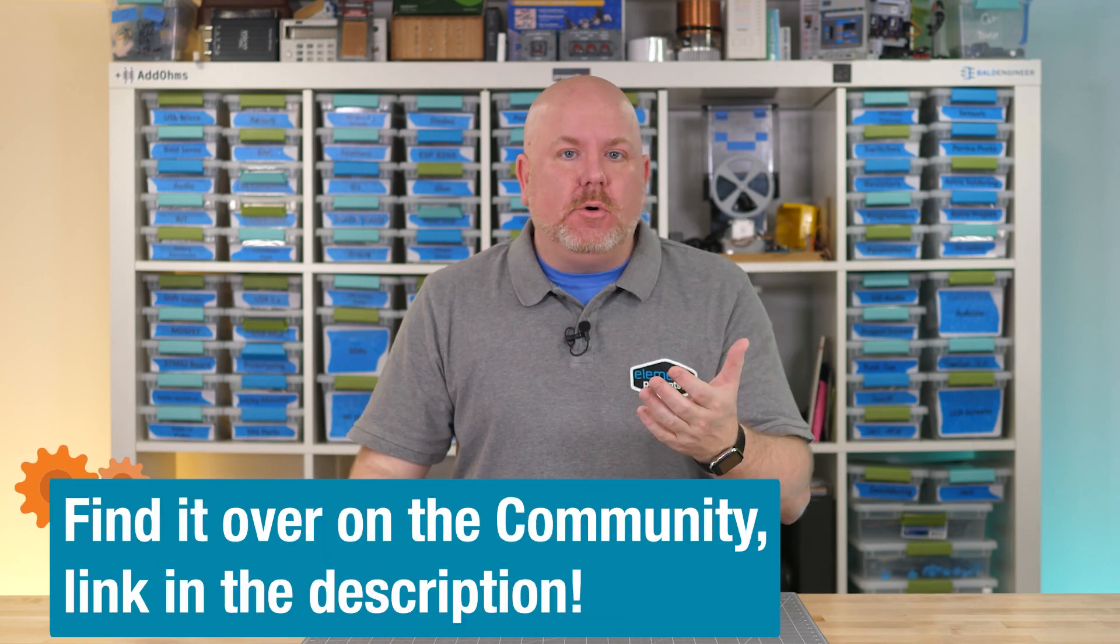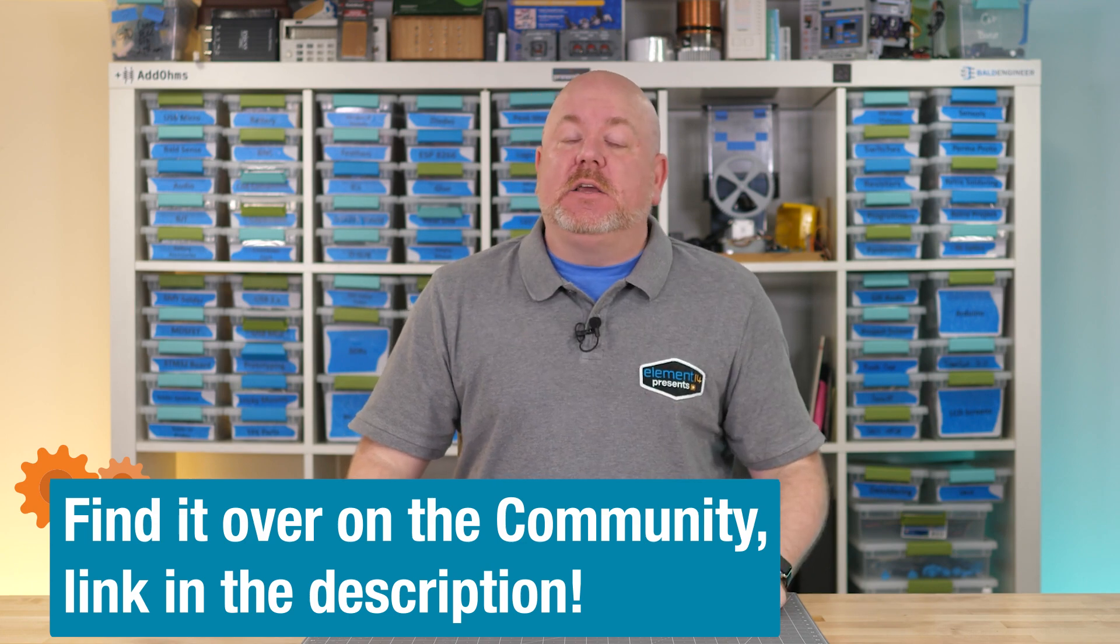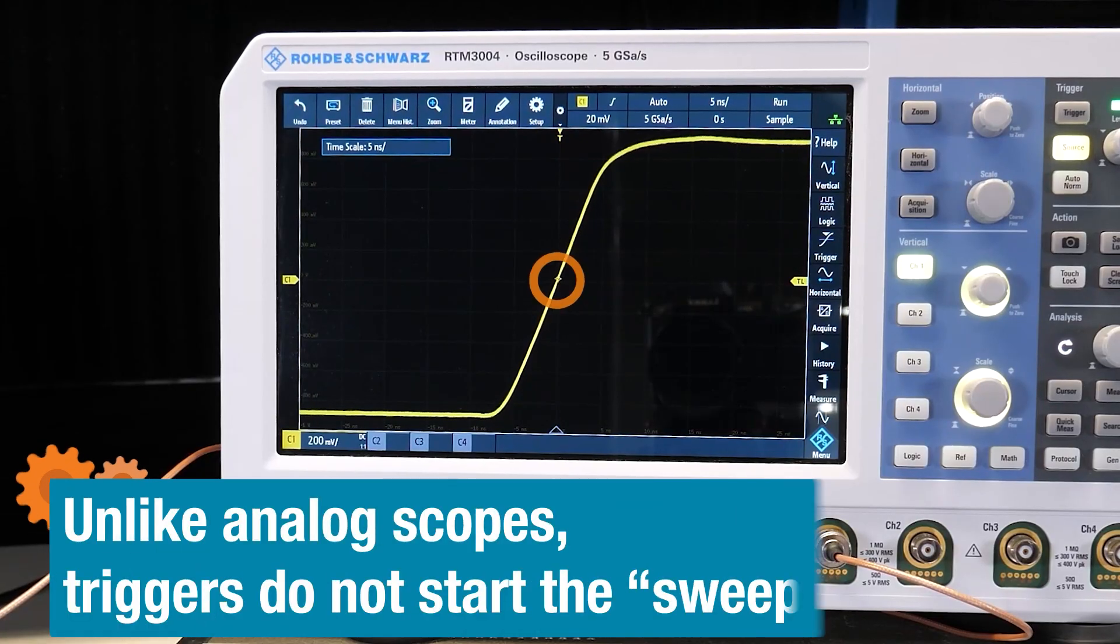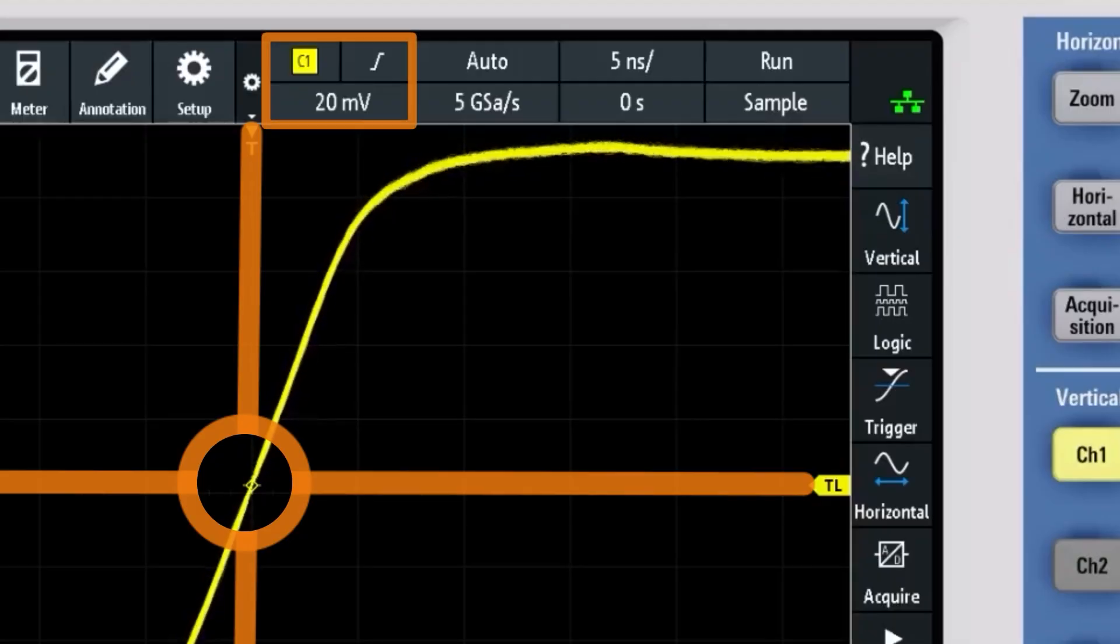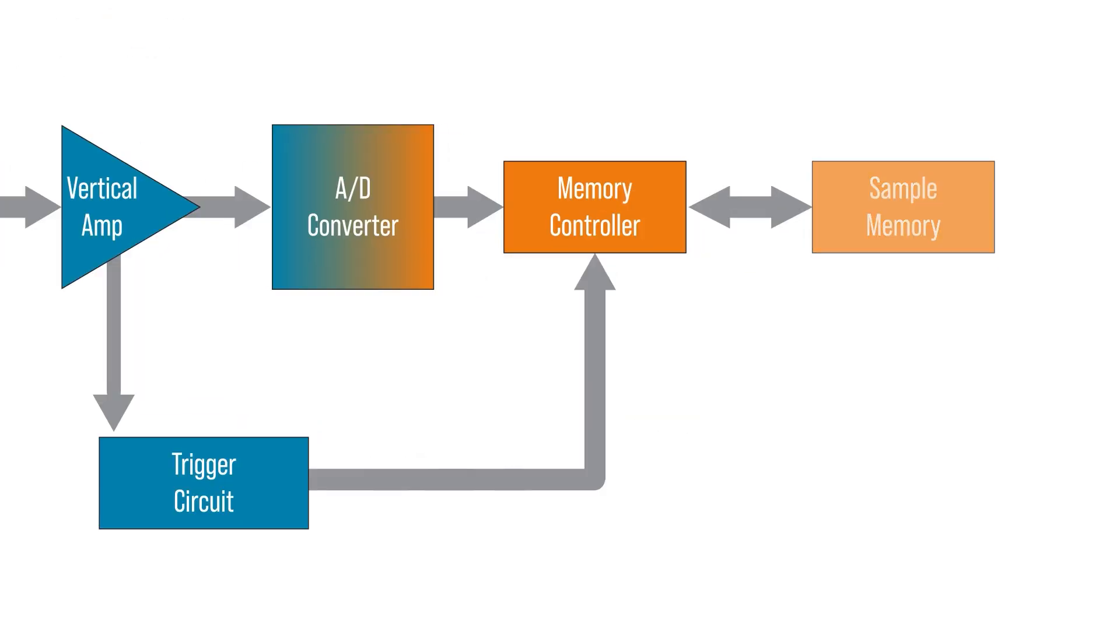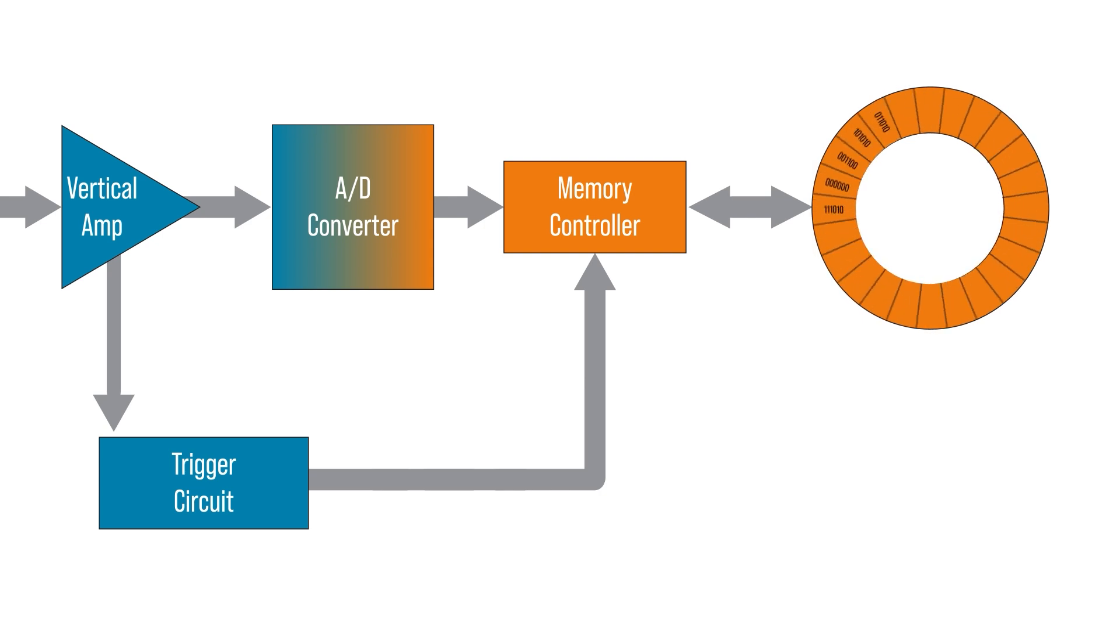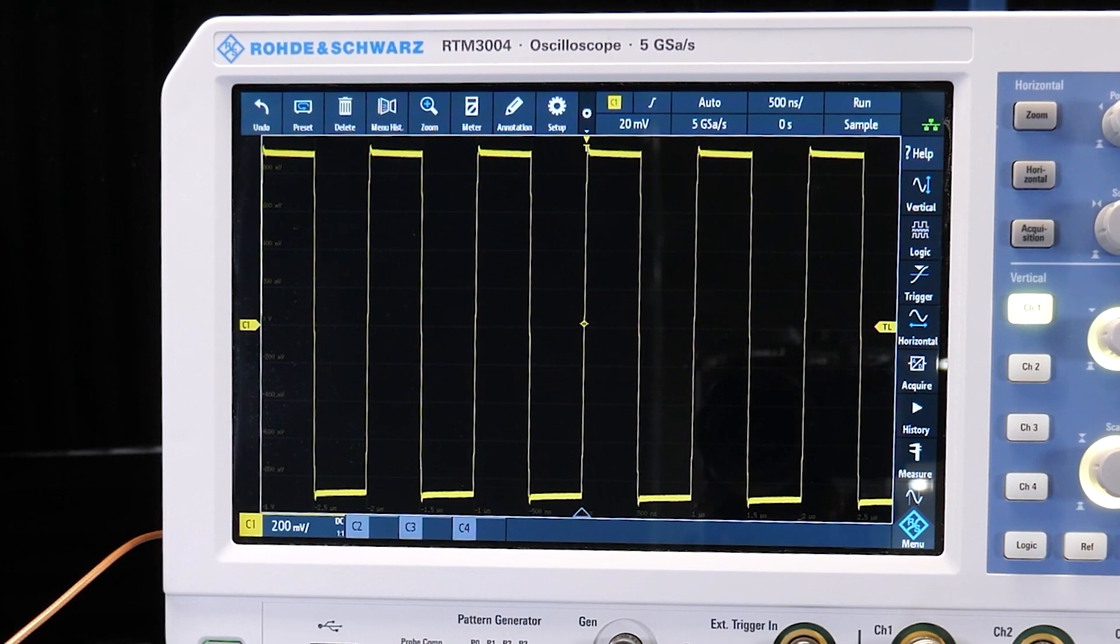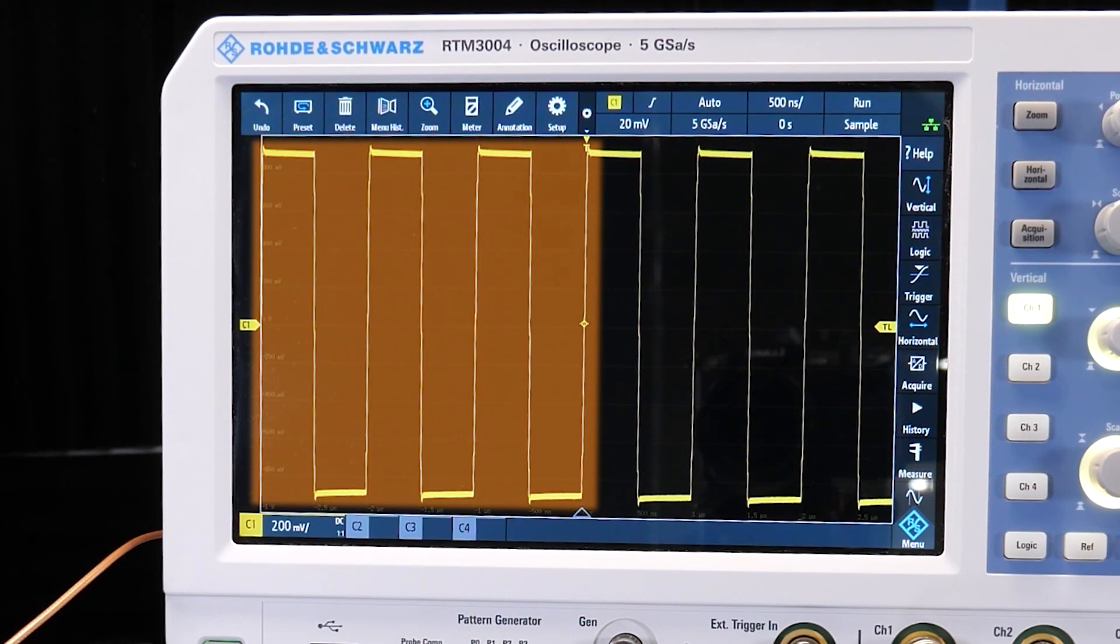For this video, I am focused on the analog trigger types. We did an episode on protocol triggers for buses like Serial UART or I2C. Check the show notes on the Element 14 community for that one. Looking at an oscilloscope screen, generally the center point is where a trigger event occurs. The most common event or trigger is a rising or falling edge at a specific voltage level.